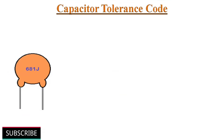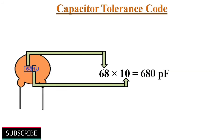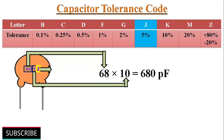Some capacitors have a tolerance code printed on them. For example, if a ceramic capacitor has 681J printed on its surface, the alphabetic letter J indicates its tolerance. 681 gives a value of 680 picofarads, and J indicates a tolerance of plus or minus 5%. A table shows the tolerance values for different alphabetic letter codes.